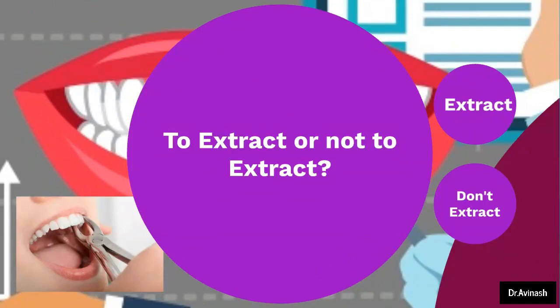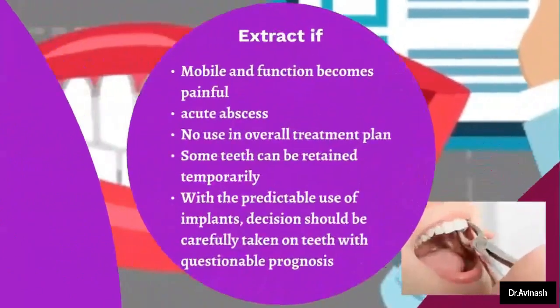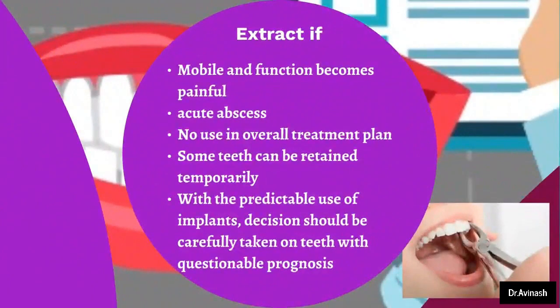Now let's see when to extract the tooth immediately. It has to be extracted immediately if it is mobile and impairs function — that is, if the patient is finding difficulty and the tooth hurts while chewing. Also, if there are any acute abscesses and the tooth cannot be saved, it has to be extracted immediately. And if the tooth is of no use in the overall treatment plan, it has to be extracted.